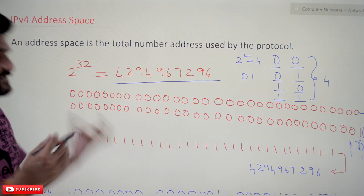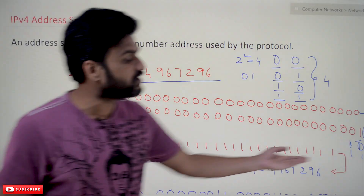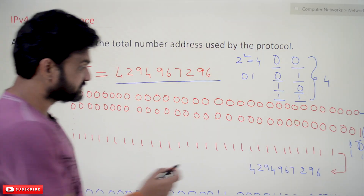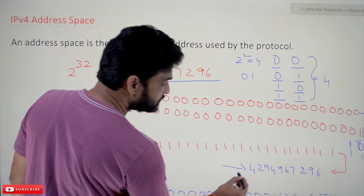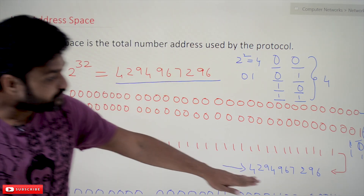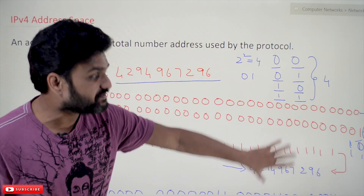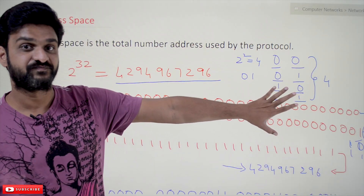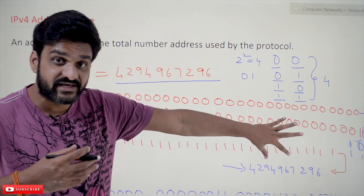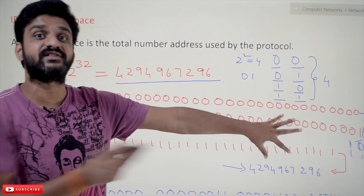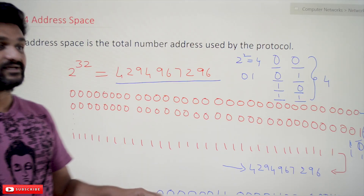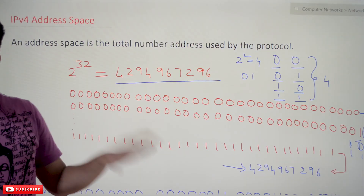For example, the last IP address possible is all ones — 32 ones. So from zero all the way to this last number, these many unique IP addresses are possible. This means that many systems can be given unique addresses. But this kind of visualization in binary is very difficult.